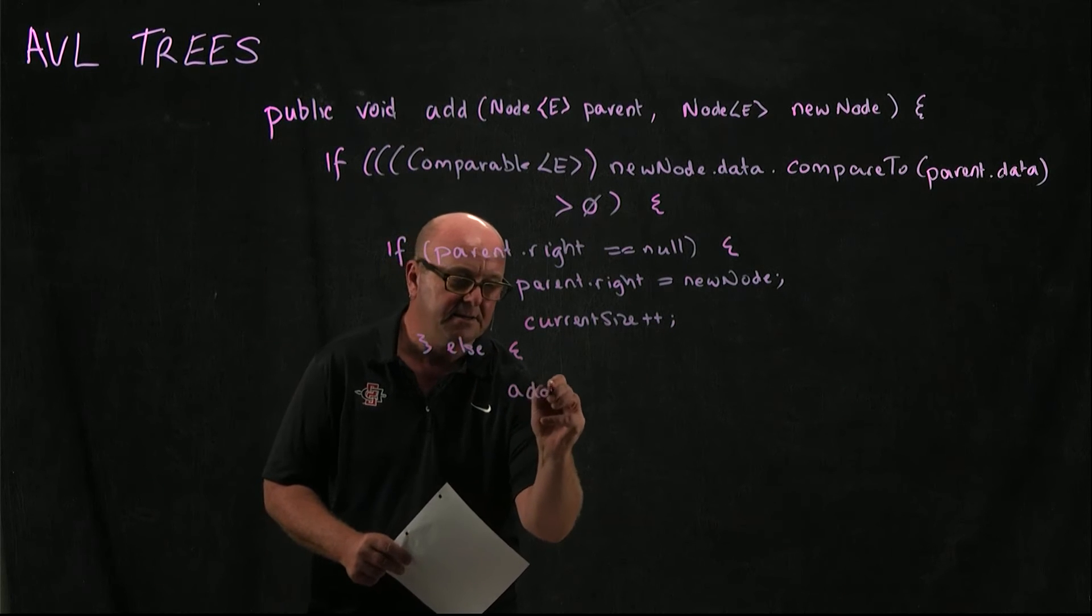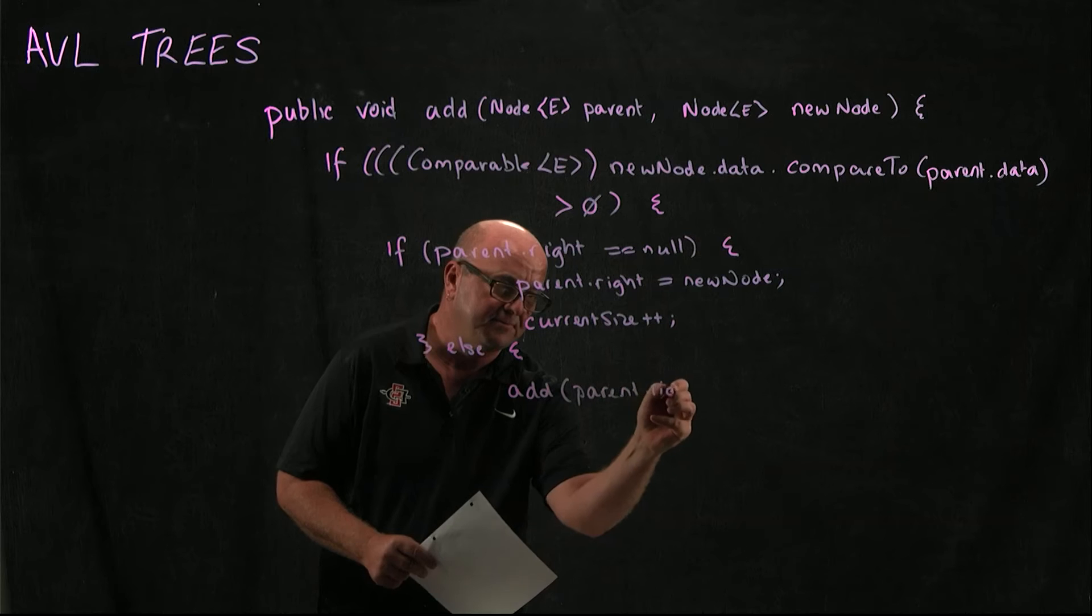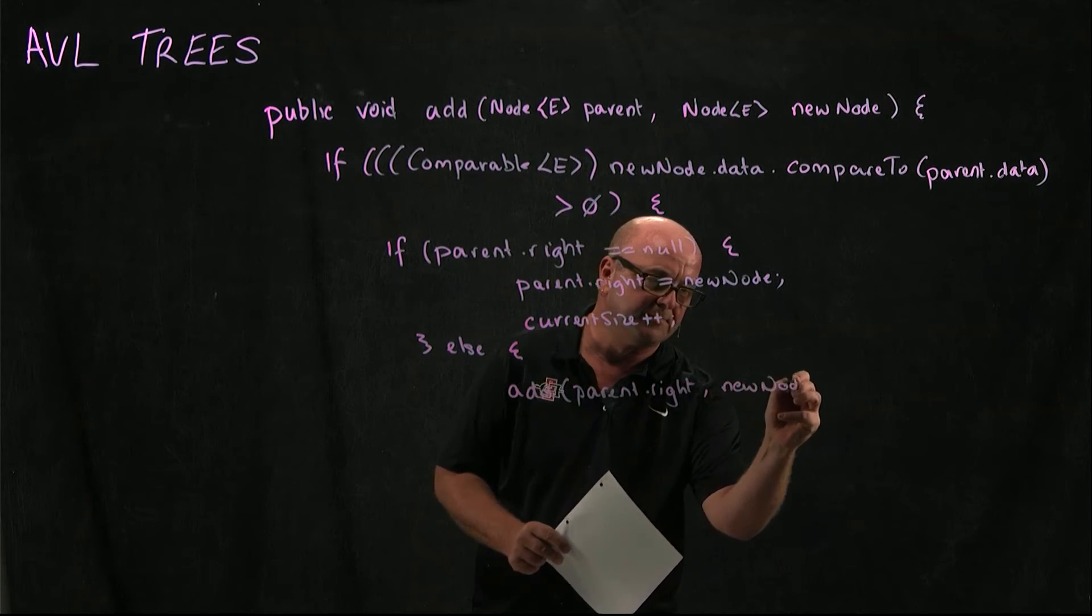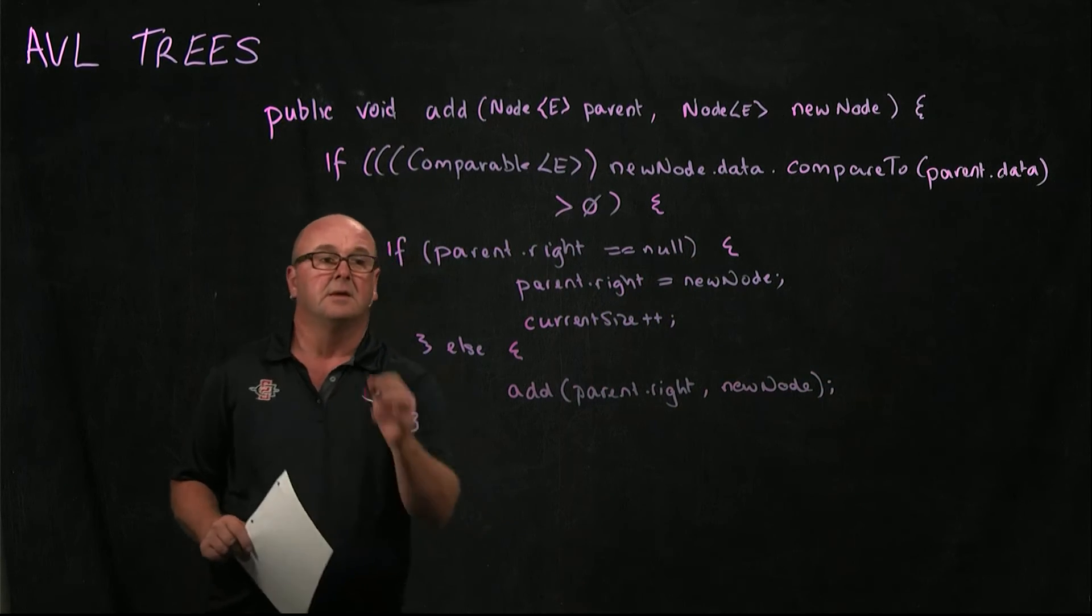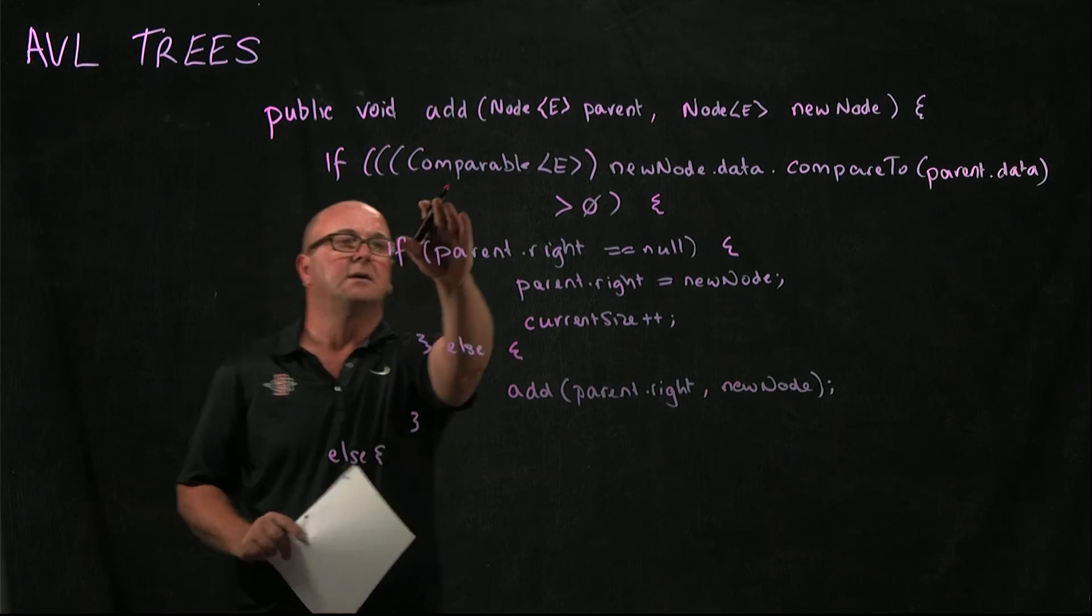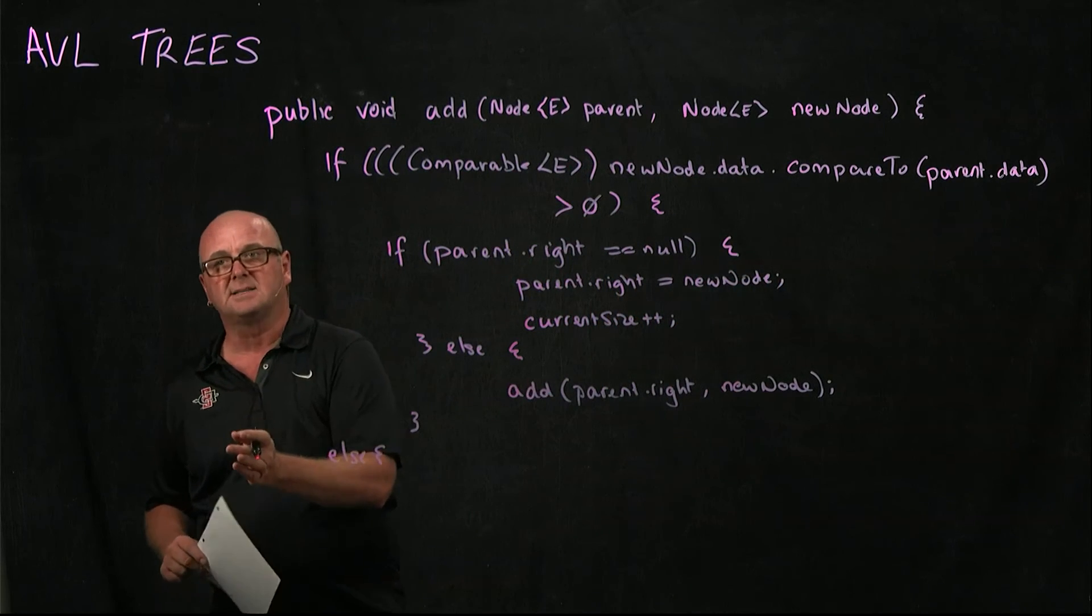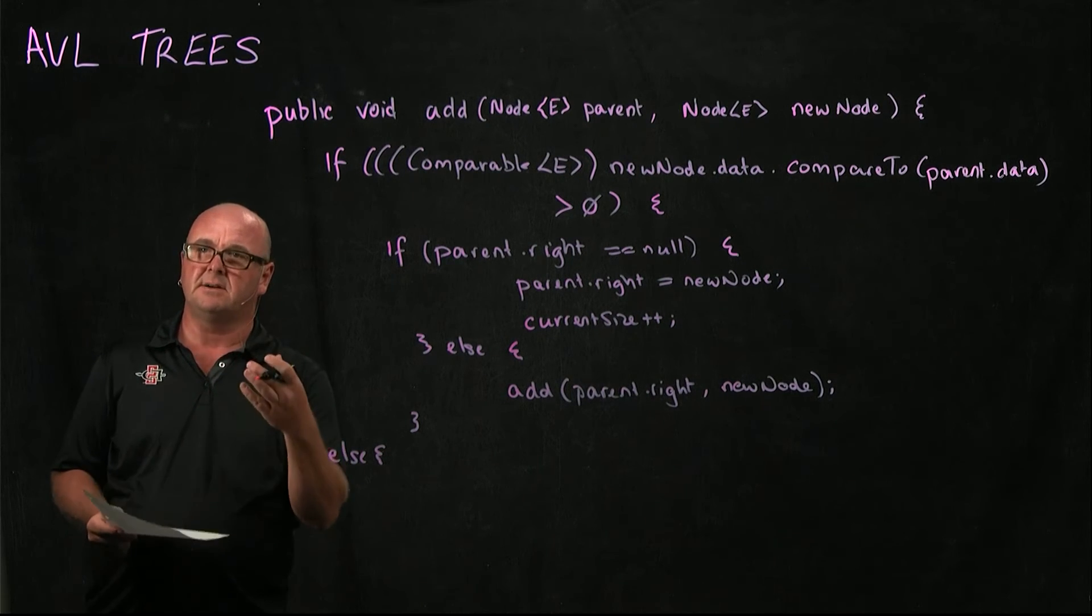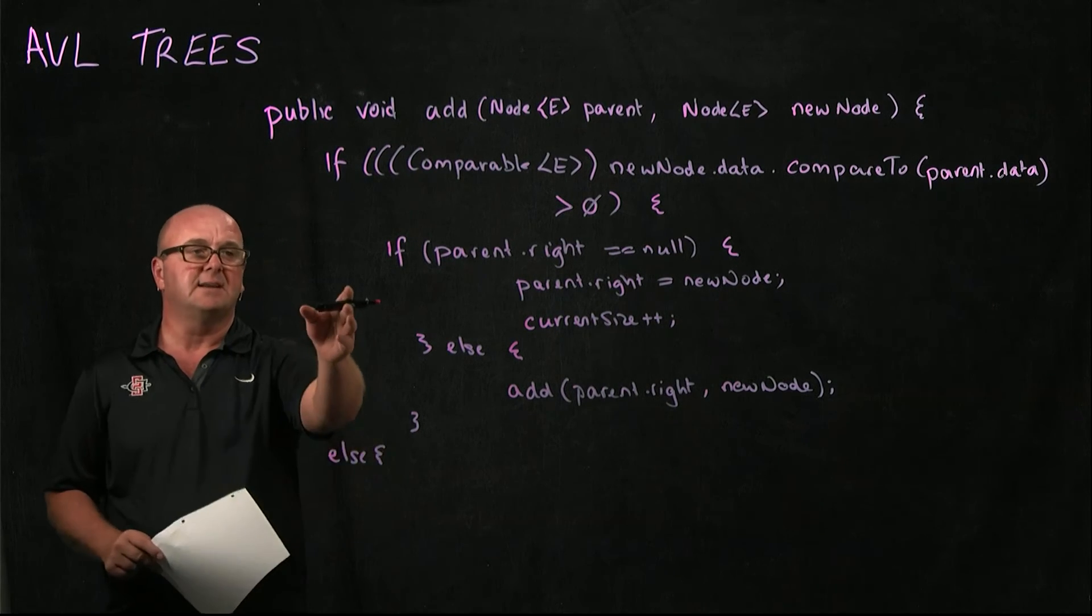So otherwise, add parent.right, newNode. If our comparable is not true, that means that we're going to add to the left-hand side. So if the object is smaller or equal to parent, we're going to add it to the left-hand side of the tree. And we're going to do exactly the same thing.